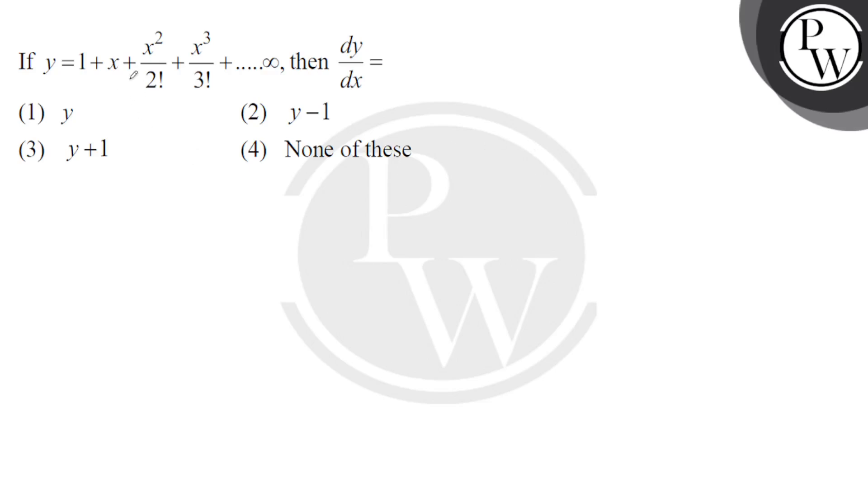Hello guys, here we have a question. y equals 1 plus x plus x squared upon 2 factorial plus x cubed upon 3 factorial and so on up to infinite. Then dy by dx is equal to?